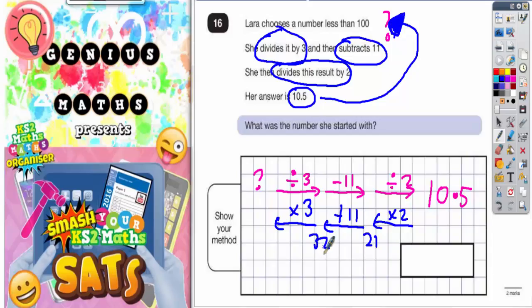And finally, we need to multiply by 3. So it's 32 times 3. If you can't do that in your head, a quick column method would help you. So 32 times 3 is 96.